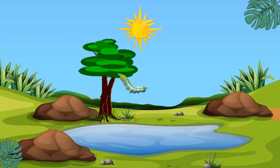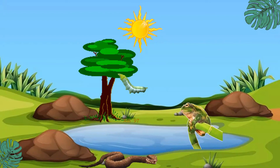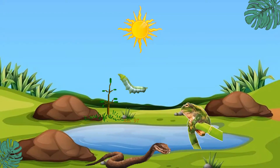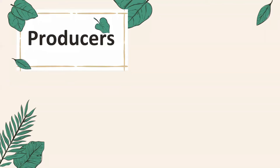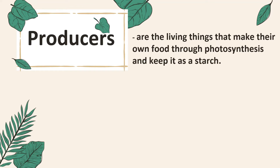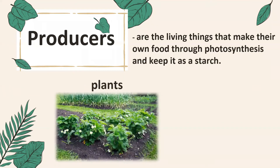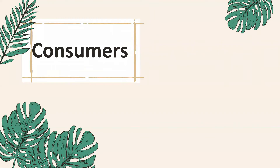Animals cannot make their own food, so they have to eat plants or other animals to get energy. Living things in a food chain have different roles. Producers are living things that make their own food through photosynthesis and keep it as starch. They are plants and algae.